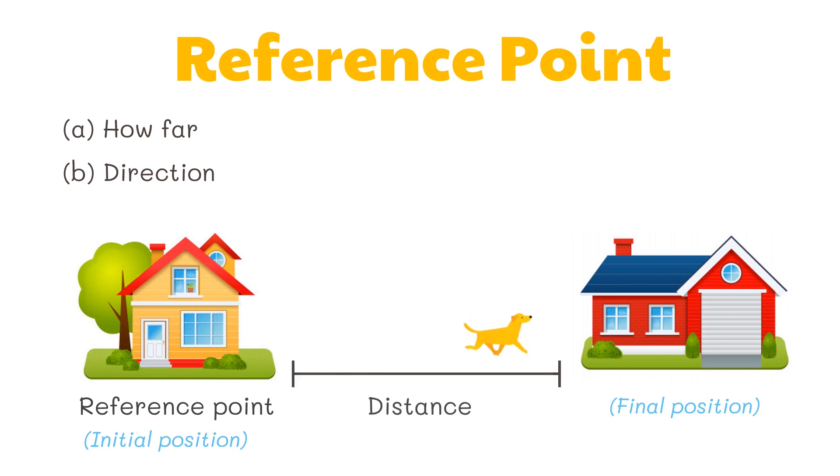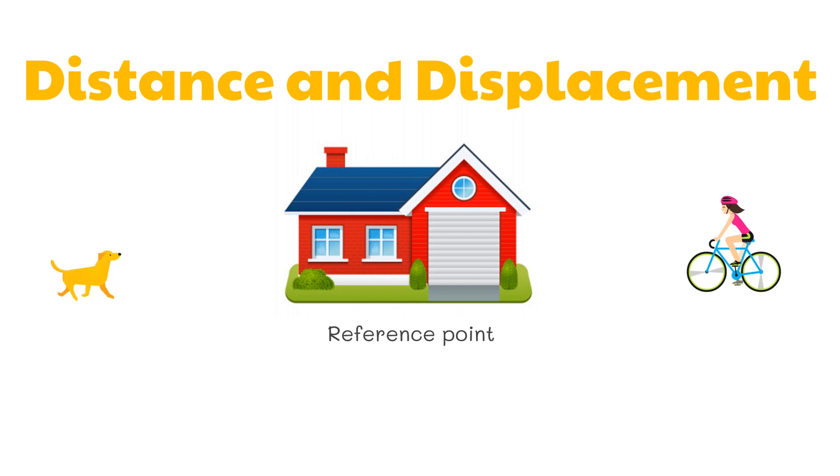Distance is the measure of the interval between two locations measured along the actual path connecting them, while the shortest path in a straight line between the initial position and final position is known as displacement. Take a look at this illustration. The distance between the dog and the house, as well as the distance between the cyclist and the house, is five meters. The displacement of the dog while moving in a straight line from her original position towards the house is five meters west.